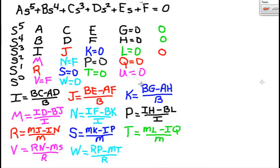W is equal to zero. W is R P minus M T divided by R. That value is zero because the two upper right values are zero.